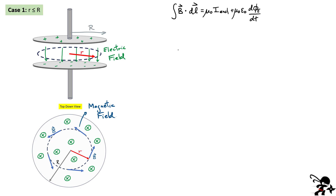In case one, our distance from the center is less than the radius of the capacitor plate. We're going to apply our modified Ampere's law that includes Maxwell's correction term. The first thing we notice is that if I place a loop inside this plate region, I have no real current enclosed, so that term goes to zero. Now I want to look at the electric flux term. The field inside this capacitor is constant, so I can write the flux as the field multiplied by the area inside the dashed line multiplied by cos of the angle.